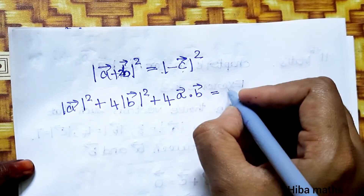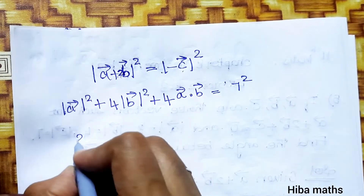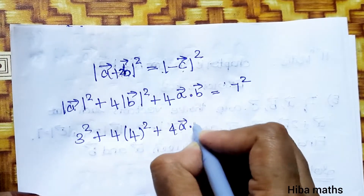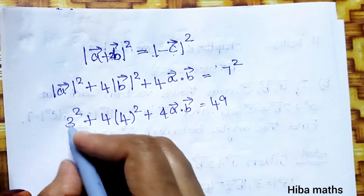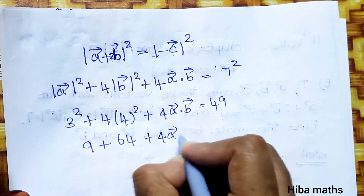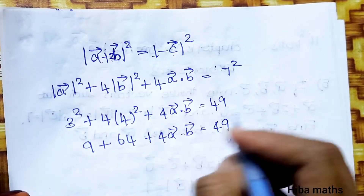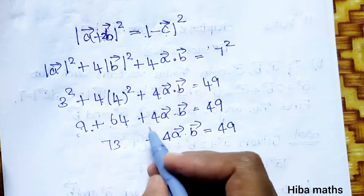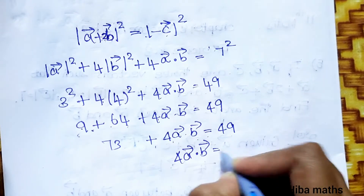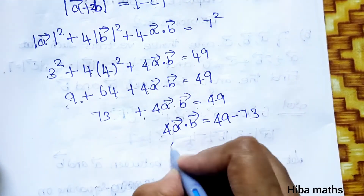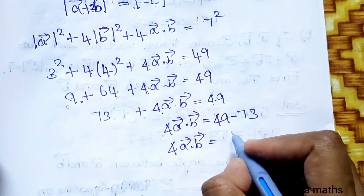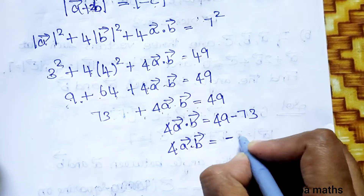Substituting values: modulus of c is 7, so right side is 7 squared equals 49. Left side: modulus of a is 3, so 3 squared is 9; modulus of b is 4, so 4 squared is 16, and 4 times 16 is 64. So: 9 plus 64 plus 4(a vector dot b vector) equals 49. Therefore 4(a vector dot b vector) equals 49 minus 73, which gives 4(a vector dot b vector) equals minus 24.